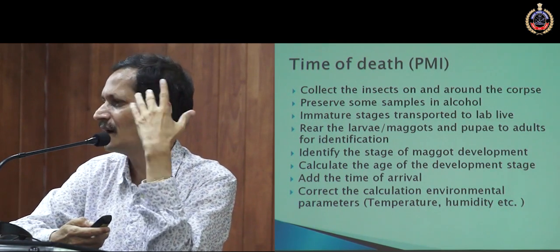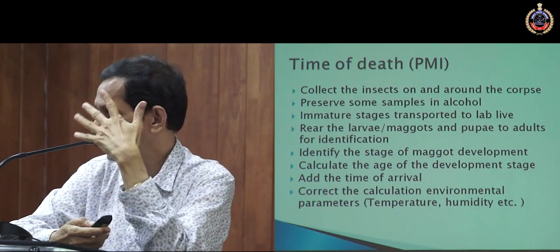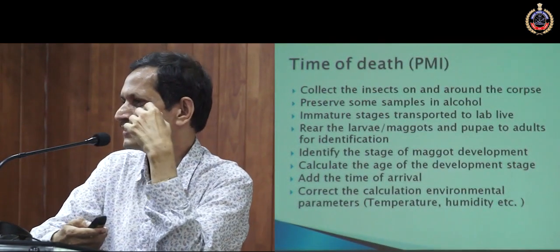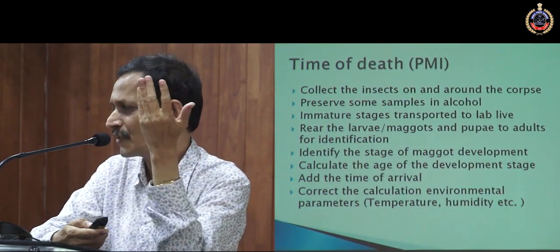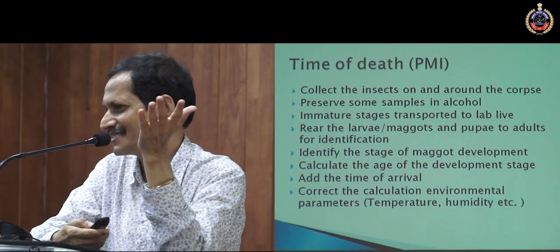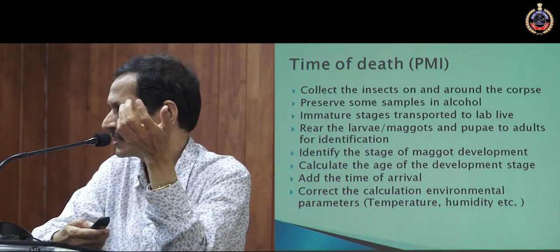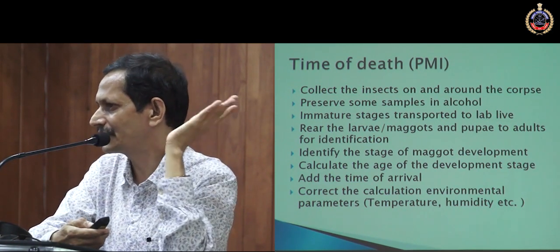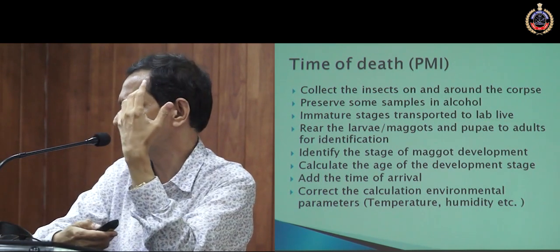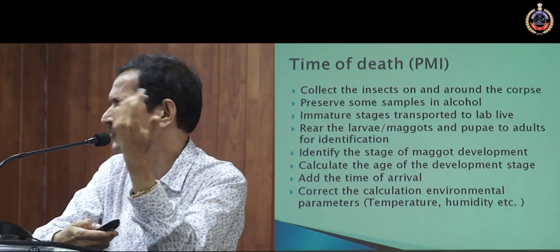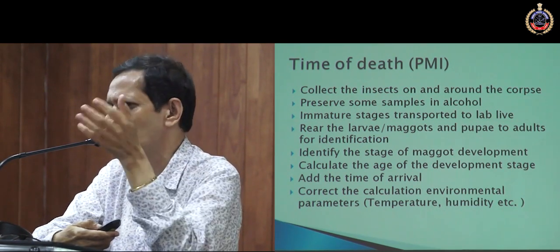You may have to take into consideration various other aspects — temperature, humidity, which may also alter the development period. You should correct your data using this weather data. That is how the time of death is normally calculated from the species of insect as well as the stage of the insect. Based on the data of when a particular species arrives after death, we can calculate the time of death. Forensic entomology is an alternative method — if your normal method is not working, then you can use insect data.